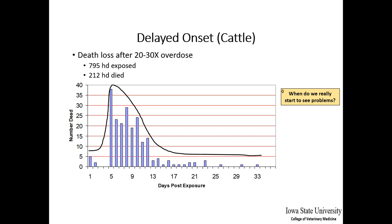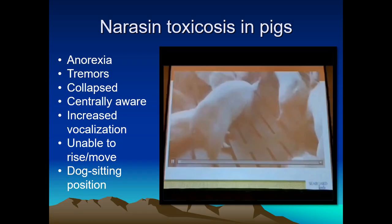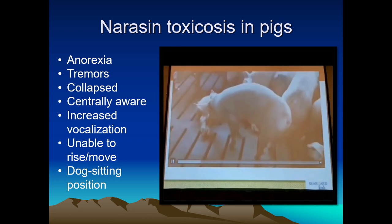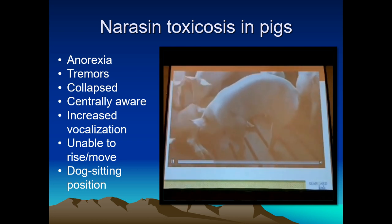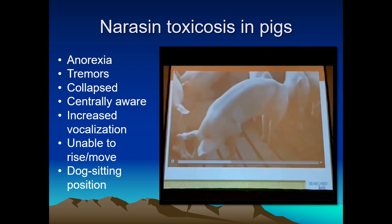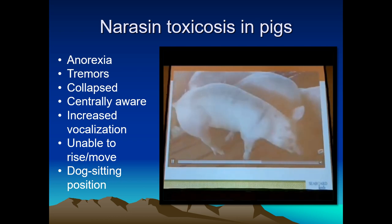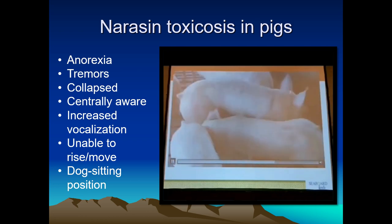The prolonged deaths seen after day 13 show that monensin causes irreversible heart lesions, and those animals may linger and be sick for weeks before dying. A case of narasin excess exposure in pigs took place in Oklahoma, which will be discussed in more detail later.